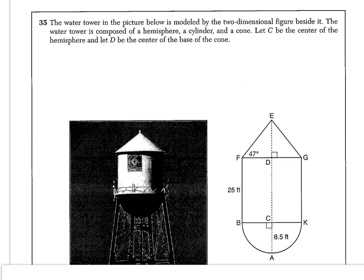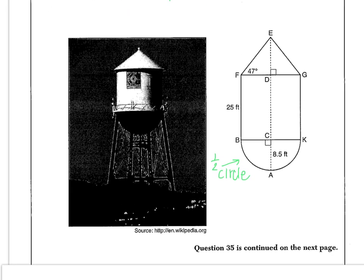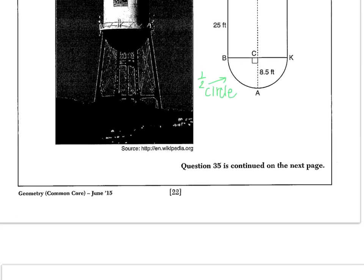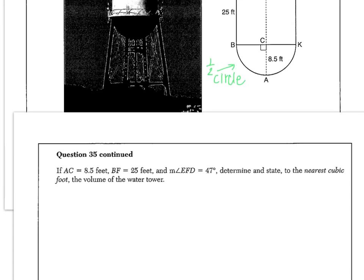We have this water tower that's modeled by a two-dimensional figure beside it. The water tower is composed of a hemisphere, which is a half sphere, a cylinder, and a cone. It says let C be the center of the hemisphere and let D be the center of the base of the cone. Question 35 is continued on the next page, so I'm going to keep scrolling up.